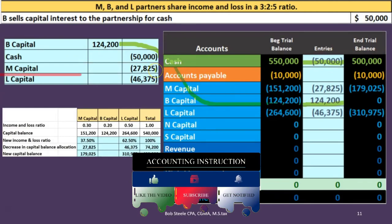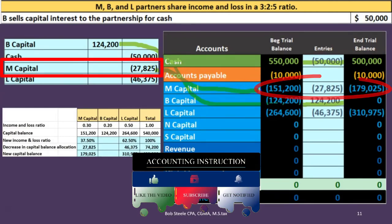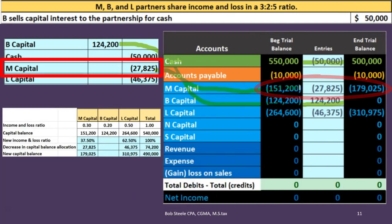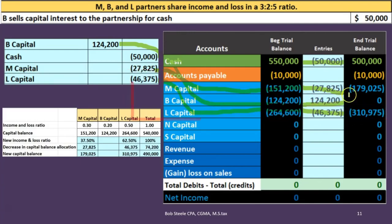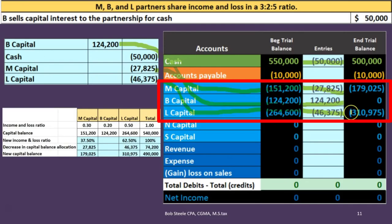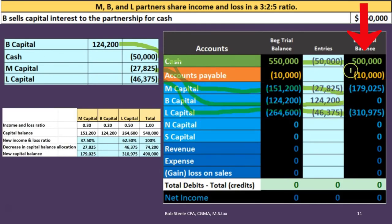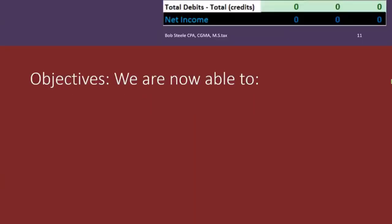M has a credit balance in the capital account like all capital accounts, and we credit it, increasing it from 151,200 by 27,825 to 179,025. Then L's capital account also has a credit balance and we credit it, bringing it up to 310,975. B is now off the books; M and L remain, and assets minus liabilities equals the new total capital account balance for M and L.